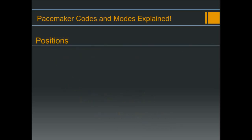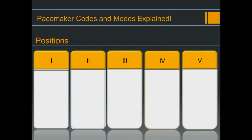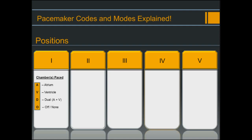Now that we have a little history, let's talk about the code. The code is made up of positions — five to be exact. Each position is assigned a letter letting you know where and how the pacemaker is going to behave. The first position represents the chamber or chambers being paced: A for atrium, V for ventricle, D for dual (meaning A and V), and O for off.